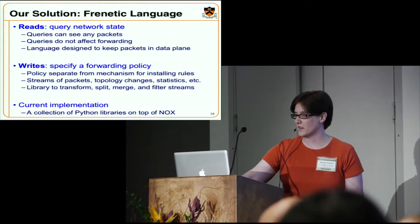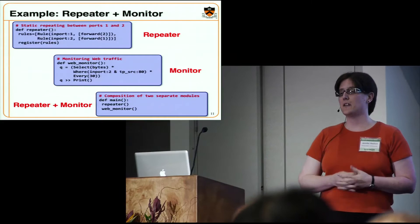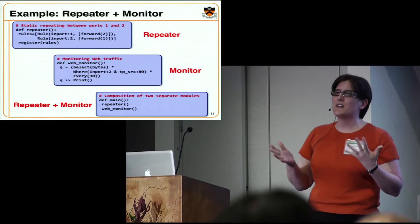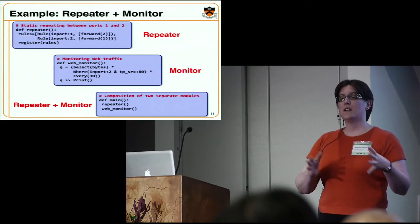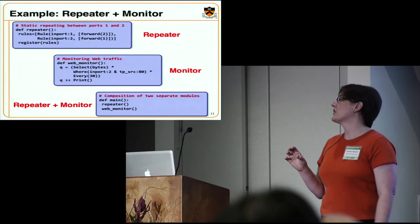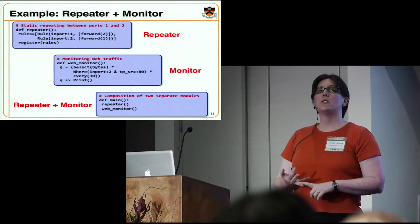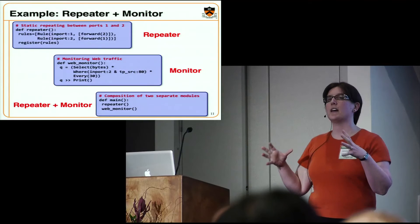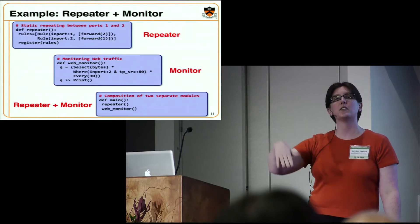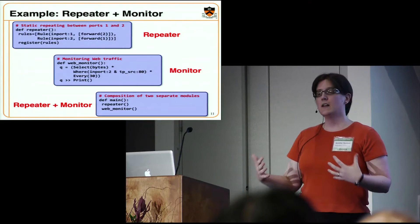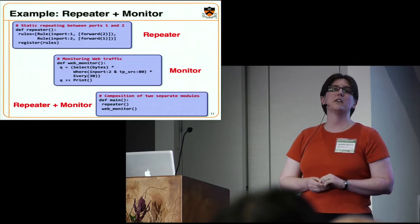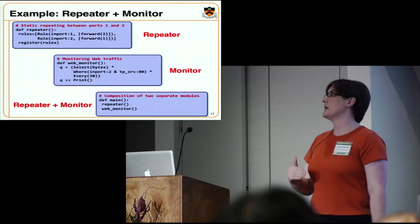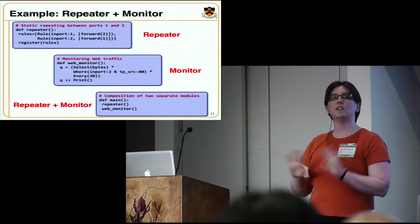Coming back to the repeater and monitor example, here's how the same thing looks in Frenetic. The repeater is not that different than what it looked like in NOX — we have rules taking traffic on one side and forwarding it to the opposite link. The monitoring query looks a lot like SQL: we select bytes, we want to count the number of bytes of web traffic entering on port 2 using source port 80, and we do that every 30 seconds. This never sends a packet to the controller — neither of these two modules do. They're actually proactive. The programmer just says what they want to monitor and how they want to forward. The runtime system figures out the right composition of rules to ensure both pieces of functionality are implemented correctly. Composition becomes a simple matter of saying A plus B.